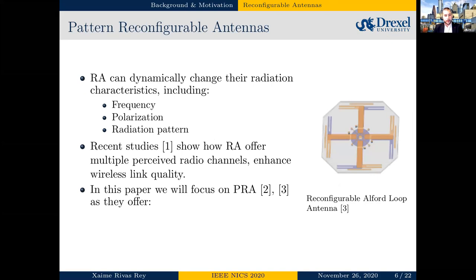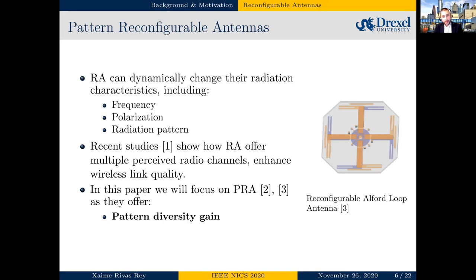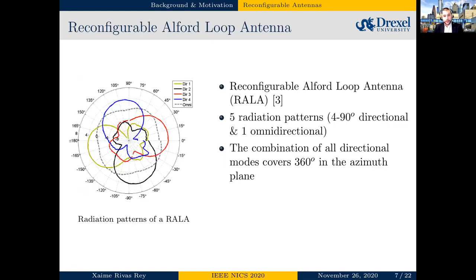This paper will particularly focus on reconfigurable antennas. A reconfigurable antenna can dynamically change its radiation characteristics, such as the frequency it uses, its polarization, or its radiation pattern. Multiple studies show the advantages of using reconfigurable antennas in wireless systems. We focus on a pattern reconfigurable antenna, which offers pattern diversity — an extra degree of freedom to adapt to the wireless environment. If the channel perceived with one radiation pattern is not convenient, we have multiple options. It also offers directional power gain, allowing us to steer the radiation pattern toward the desired source and away from interference.